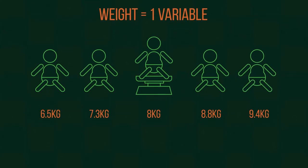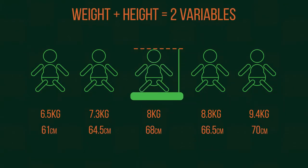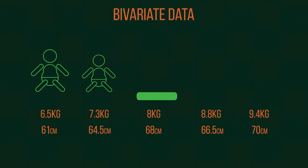Like if we weighed these babies, we only have one variable, their weight. Whereas, if we also measured the babies, we now have two variables. This is bivariate data.